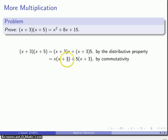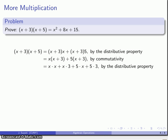And again, I have something that is set up for the distributive property one more time. This is x times x, x times 3, 5 times x, 5 times 3 by the distributive property.